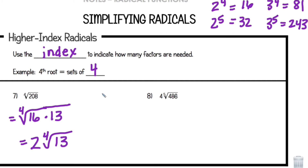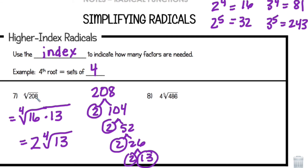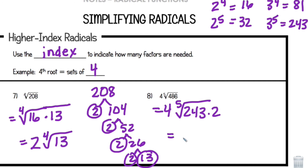Another method some people prefer for number 8 is the factor tree. For 208: 2 times 104, then 2 times 52, 2 times 26, 2 times 13. You can see the prime factors here — there are four 2s, so one 2 comes out of the 4th root, leaving 13. For number 8: 4 times the 5th root of 486. I see that 486 is divisible by 243, so it's 243 times 2. Since 3 to the 5th is 243, a 3 comes out, giving 3 times 4 equals 12. The answer is 12·⁵√2.